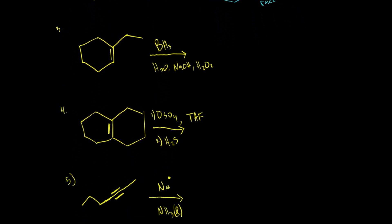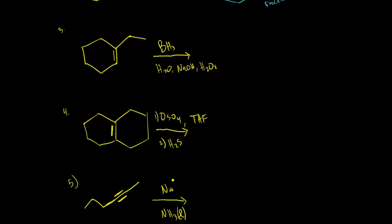Let's go to number three. I have hydroboration oxidation, and I see a little bit of H2O2. So I know my goal here is going to be adding an OH group. Is it going to go on the Markovnikov or the anti-Markovnikov? Since I have that R2O2, I'm going to put my OH group on the anti-Markovnikov. So this one was anti-Markovnikov.